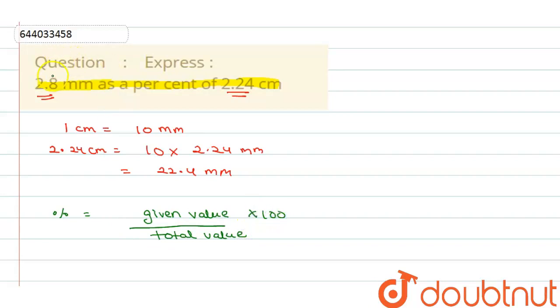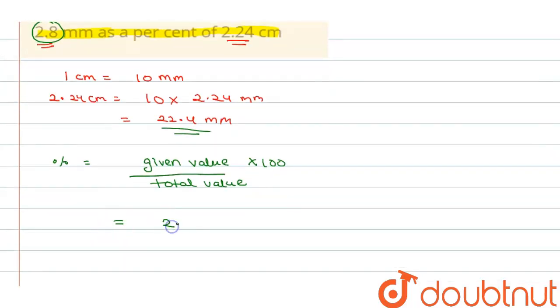In this we have the given value, and the total is this. So we can say 2.8 divided by 22.4, multiply 100.